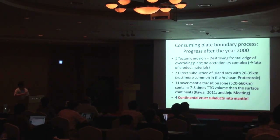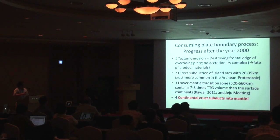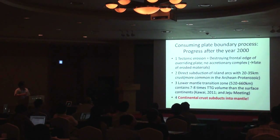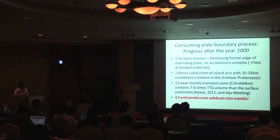The first important concept has come from so-called tectonic erosion. Tectonic erosion means that the long frontal edge of overlying plates, which is mainly continental crust with no accretionary complex, is removed. The question is: where have the tectonically eroded materials gone? This is the first important observation and question.